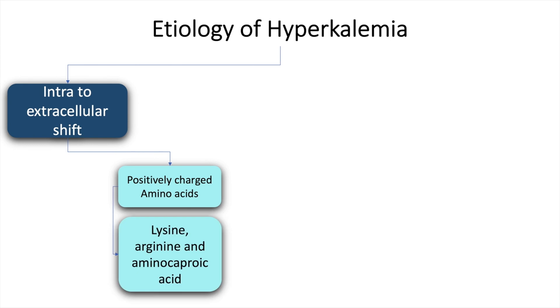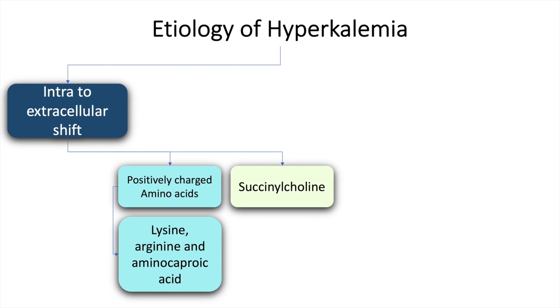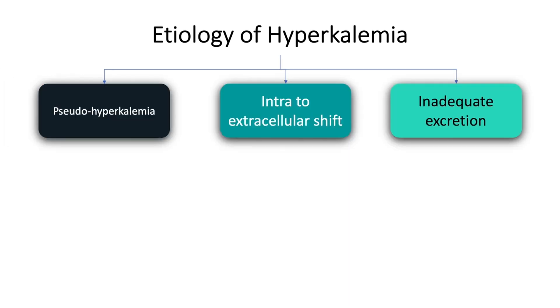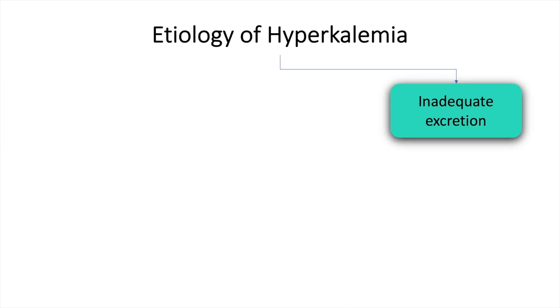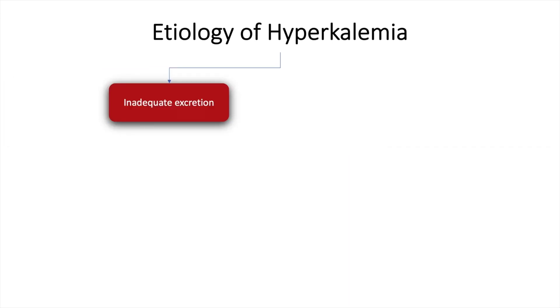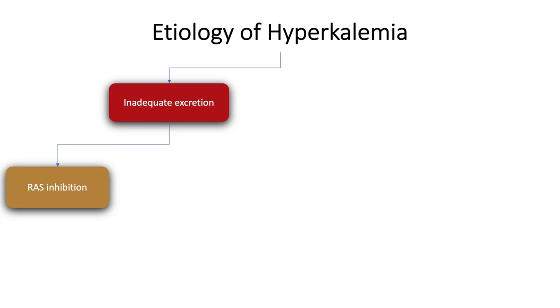Intra-to-extracellular shift may also occur because of positively charged amino acids such as lysine, arginine, and aminocaproic acid, succinylcholine, and tumor lysis. Inadequate excretion may occur because of renin-angiotensin system inhibition, decreased distal delivery, hypo-reninemic hypoaldosteronism, and renal resistance to mineralocorticoids.